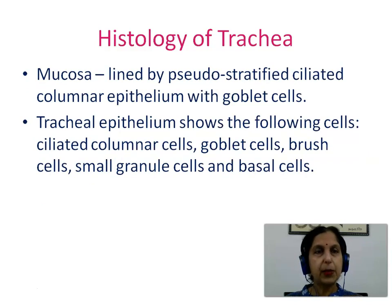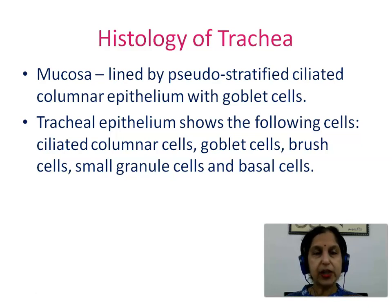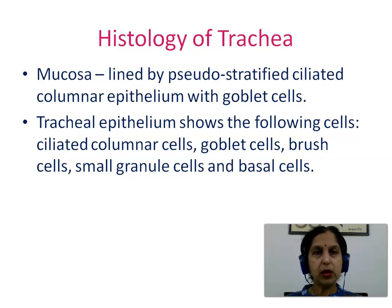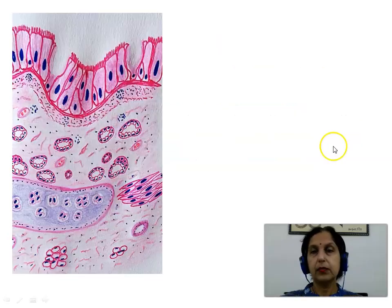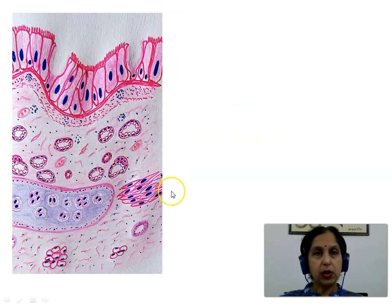Mucosa: this is lined by pseudostratified ciliated columnar epithelium with goblet cells. The tracheal epithelium shows the following types of cells: ciliated columnar cells, goblet cells, brush cells, small granule cells, and basal cells.